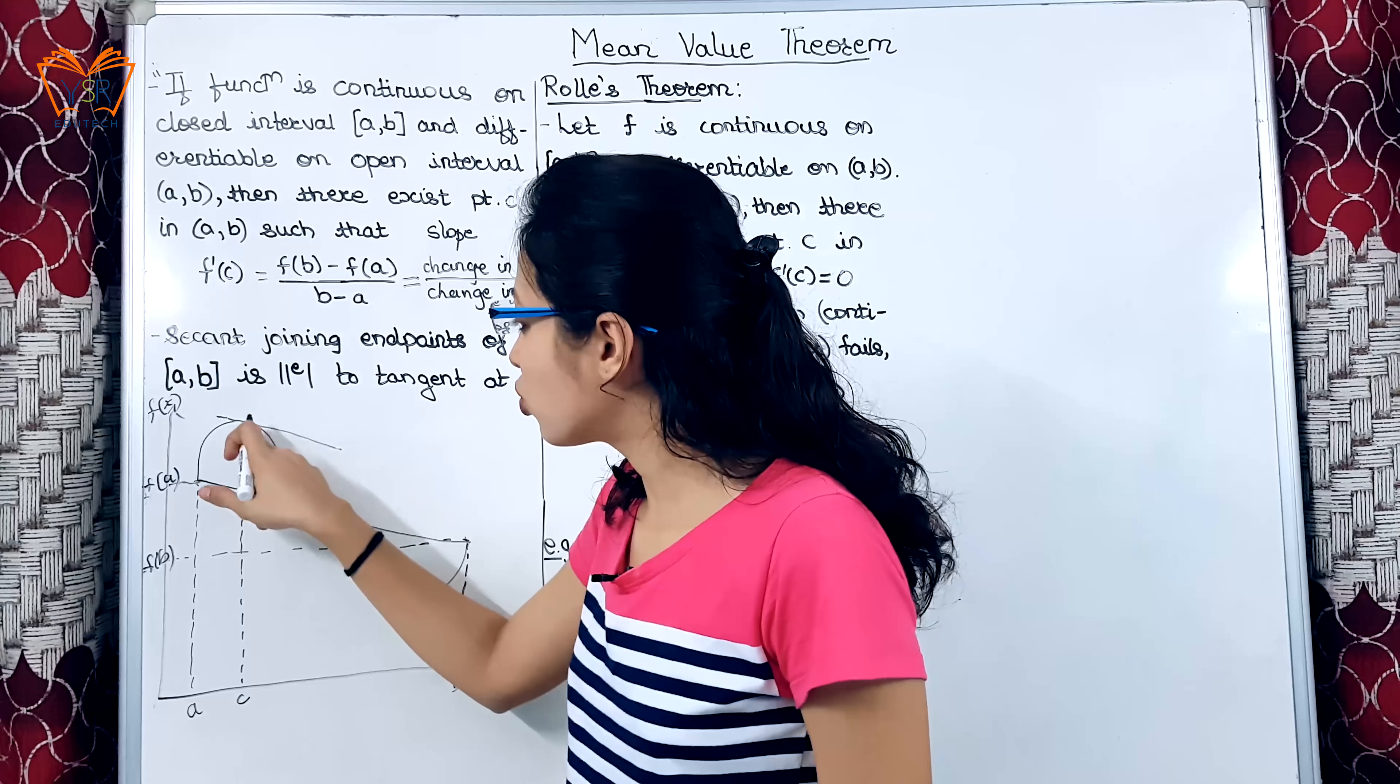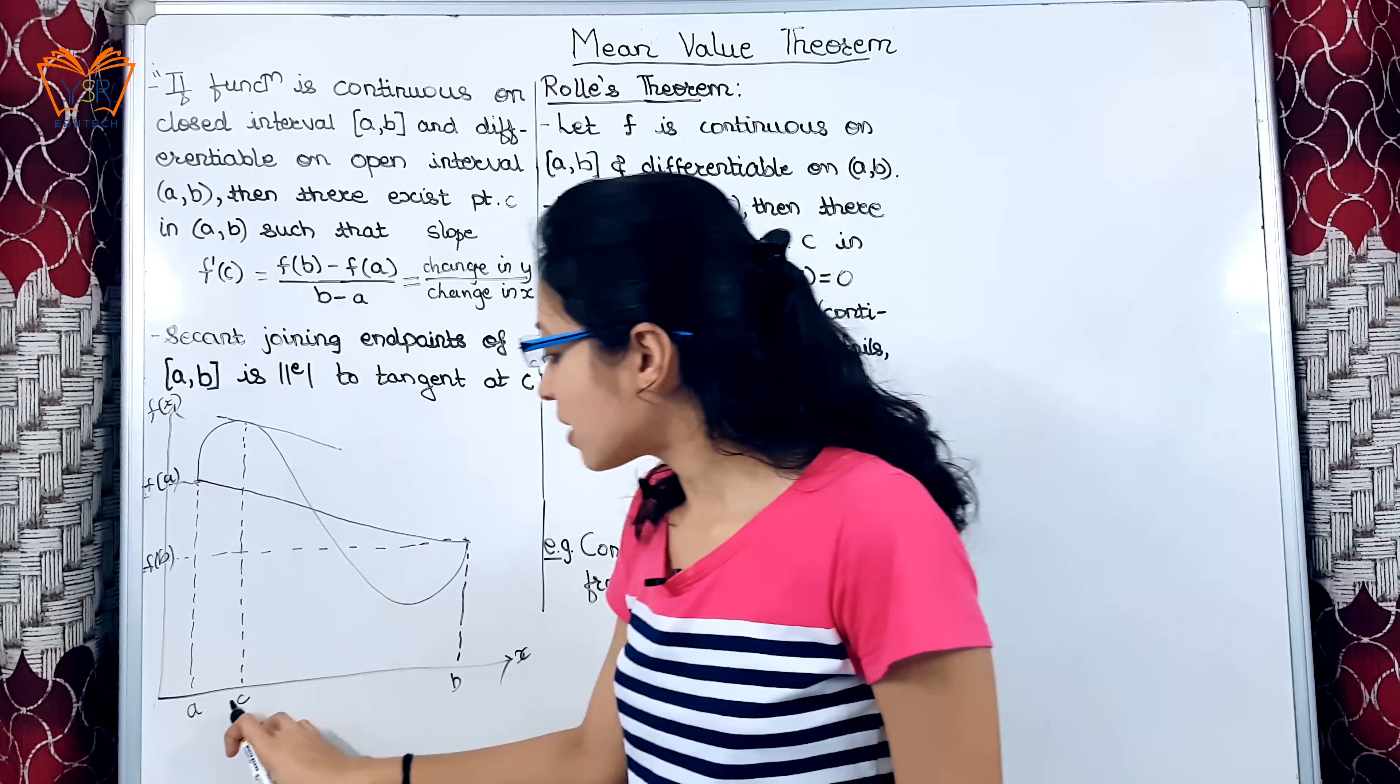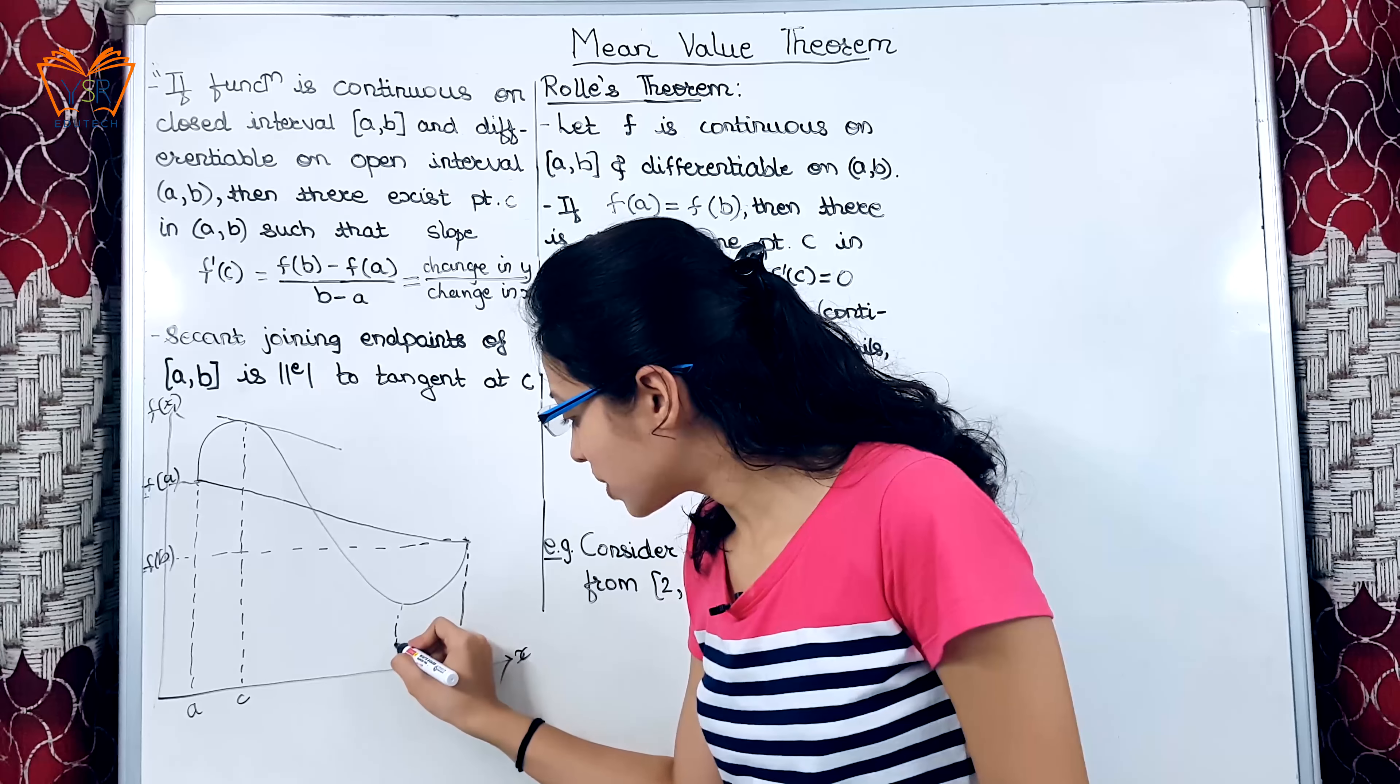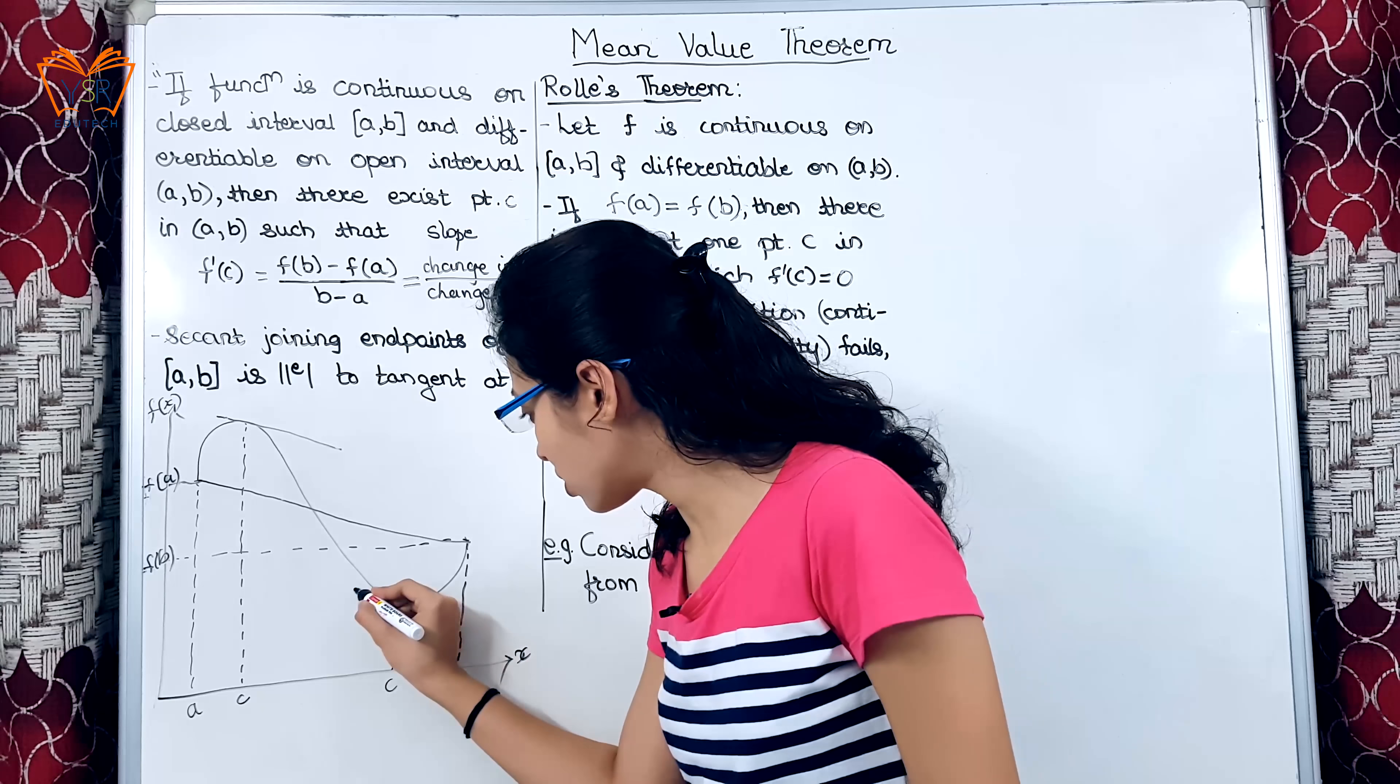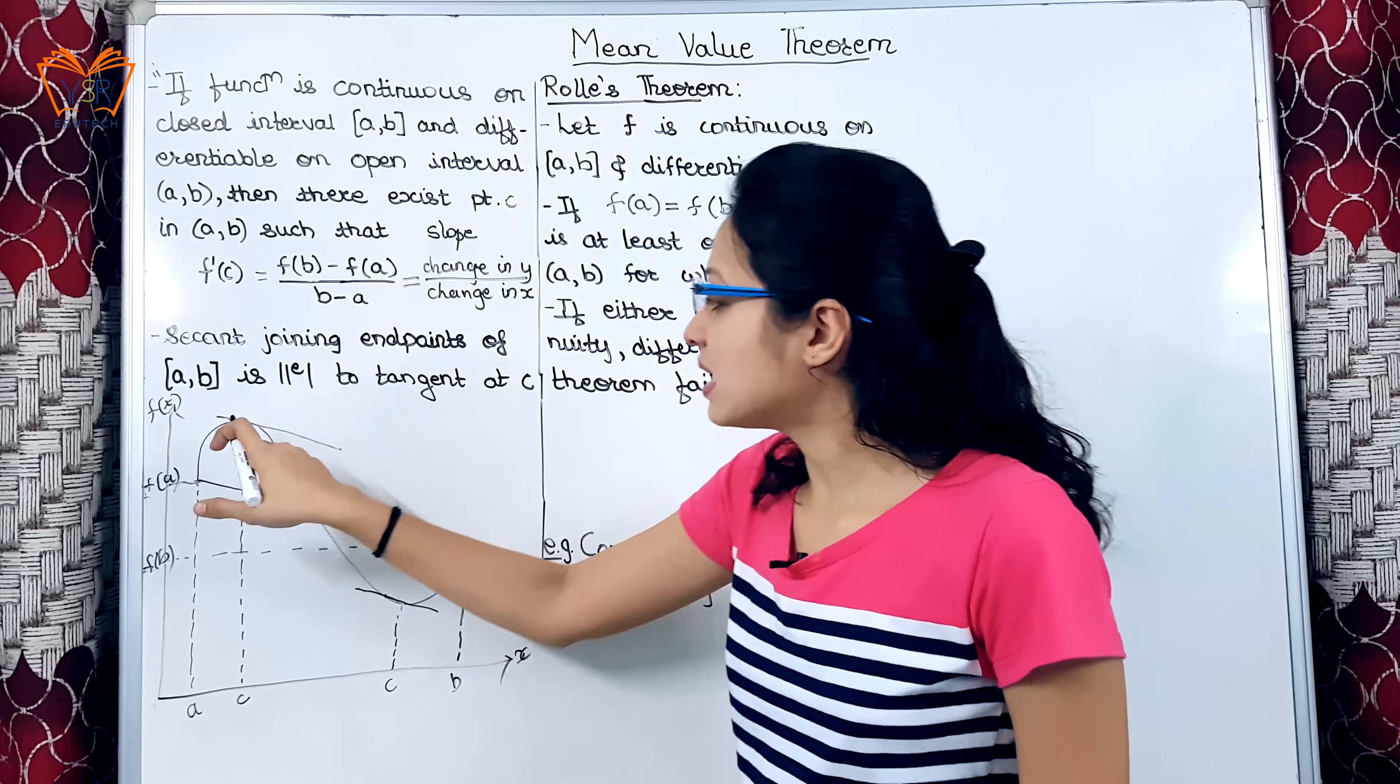Now, if I consider point c here, this will be the tangent. These two are parallel to each other. This implies that slope at this tangent is equal to slope at this secant. I have considered point c here, this point may be here also. So, we can draw a tangent here. So, this is at least point c.